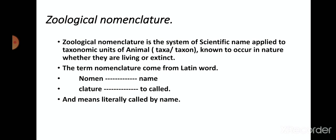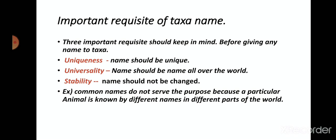There are three important requisites to keep in mind before giving any name to a taxon. The first one is uniqueness — the name should be unique, and this unique name is given to a particular organism by which we can identify it. The second is universality — the name should be used all over the world, so it does not show differences in naming pattern in different regions.